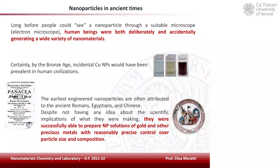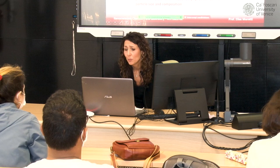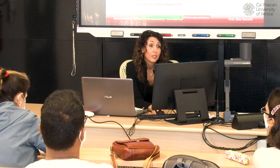For example, by the Bronze Age, incidental copper nanoparticles would have been prevalent in human civilization. It's hard to say when human beings started making incidental nanoparticles, but probably as soon as people started taming fire — you can find small nanoscale particles of soot in the smoke and in the embers. And for sure, in the Bronze Age, copper nanoparticles were present.